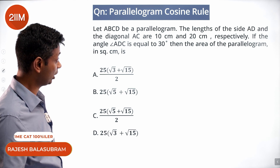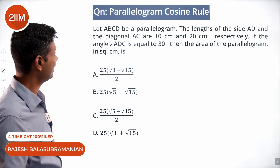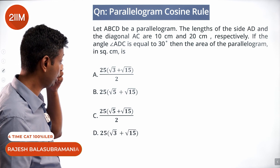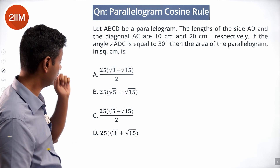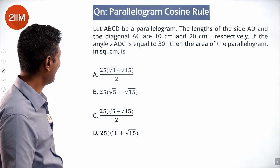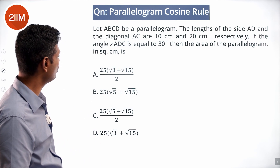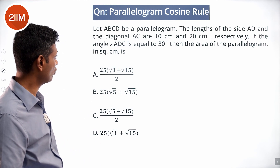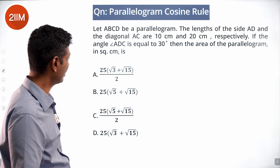Let ABCD be a parallelogram. The lengths of side AD and diagonal AC are 10 and 20 respectively. The angle ADC is equal to 30 degrees. Find the area of the parallelogram in square centimeters.